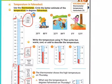So let's go ahead and look at number one. It says use the thermometer, circle the better estimate of the temperature in degrees Fahrenheit. You can see this person shoveling some snow. Would that be 20 degrees Fahrenheit or 80 degrees Fahrenheit? Hopefully you said that would be 20. Number two, there's a picture of kids playing in the pool. Is that a 32 degree Fahrenheit day or an 84 degree Fahrenheit day? I'm guessing you said 84.